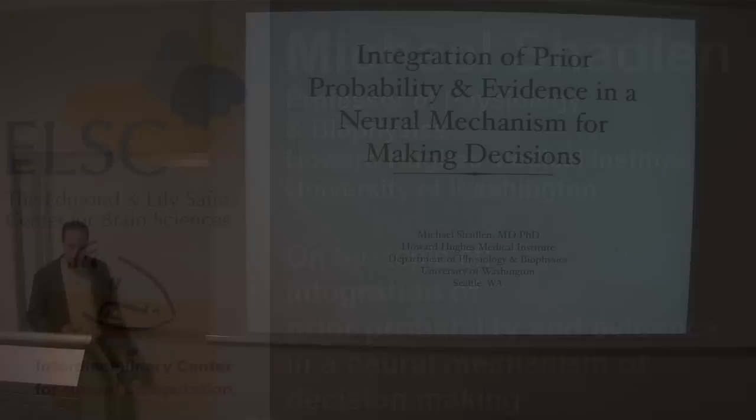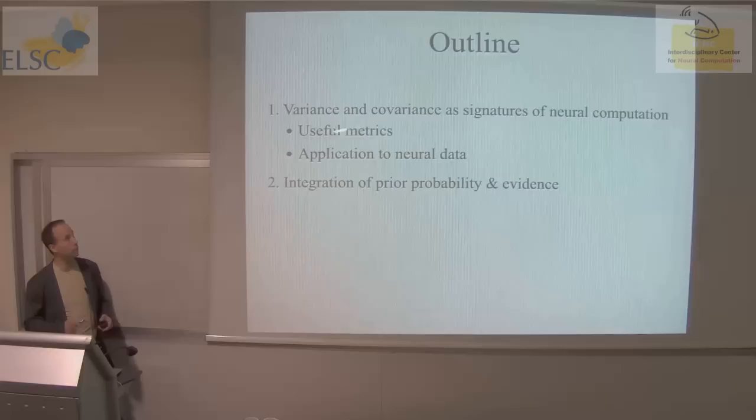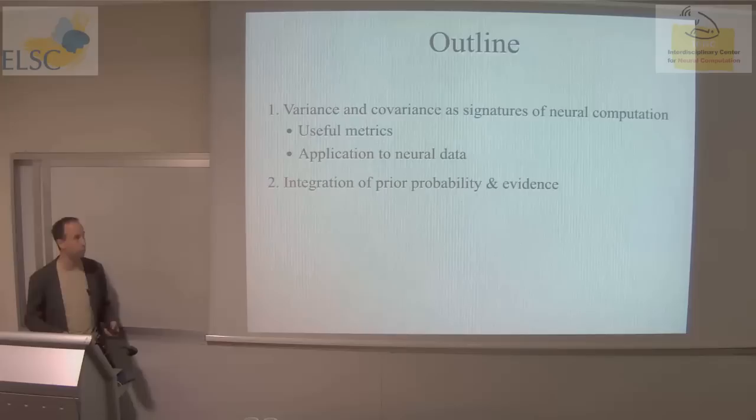I'm going to continue today and touch on what I think are more advanced topics, and they're also unpublished. The two topics I'm going to cover involve using variance and covariance as signatures of neurocomputation in order to bring out aspects of neurophysiology that are not immediately apparent when one averages for firing rate, and how the brain integrates prior knowledge about outcome with a stream of incoming evidence.